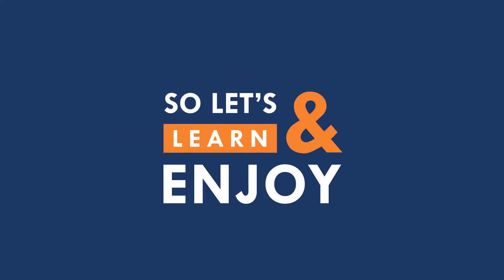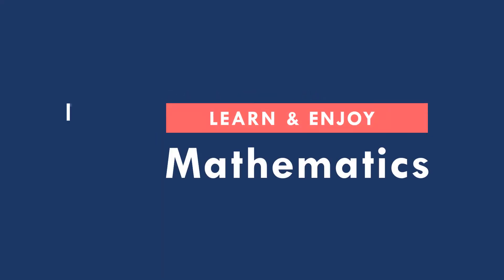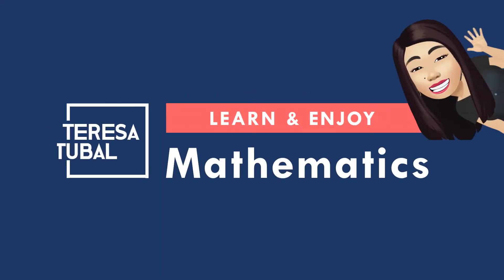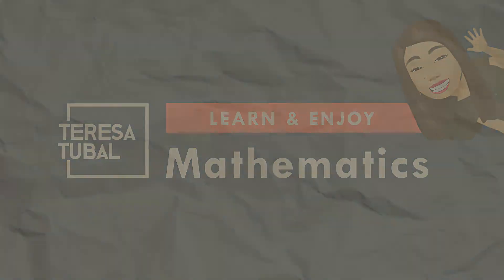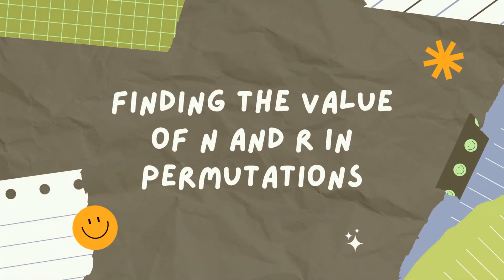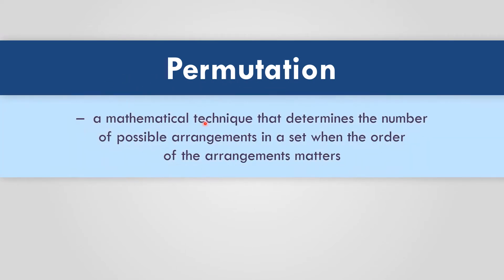Let's learn and enjoy Mathematics. Finding the value of N and R in Permutations. Permutation is a mathematical technique that determines the number of possible arrangements — how many arrangements can be made in a set when the order of the arrangement matters.